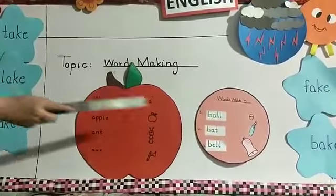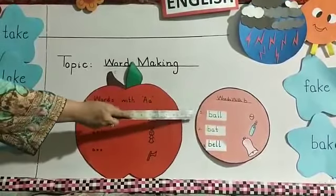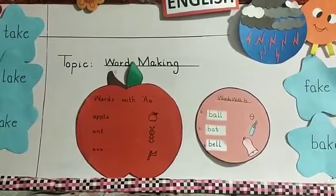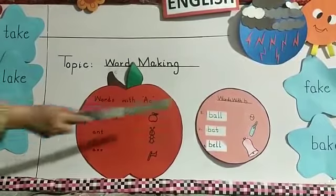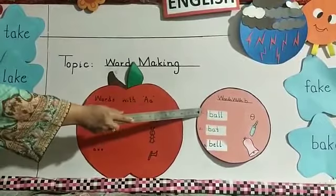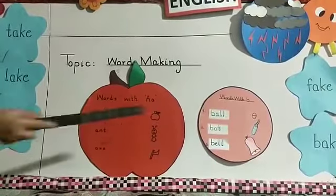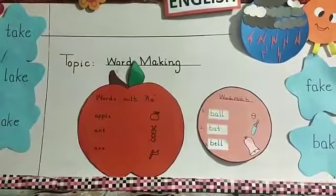Come to the next letter. That is B. What comes after A? Letter B. Now we are going to make words with letter B.